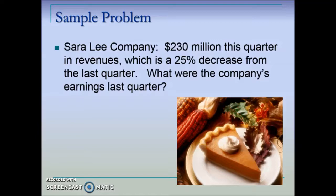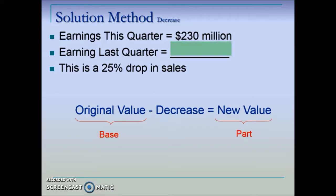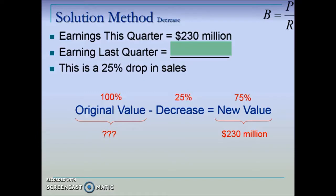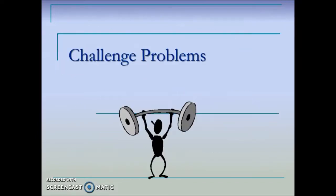In this problem: Sara Lee Company had $230 million in revenue this quarter, which is a 25 percent decrease from last quarter. What were the company's earnings last quarter? Because this is a decrease, we use the same foundation formula as the last example. The original value x is the base; the new value is the part. The base is 100, we have a drop of 25, meaning the new value is 75 percent. We have a rate and a part, so we solve for the base — the result is $307 million for last quarter.